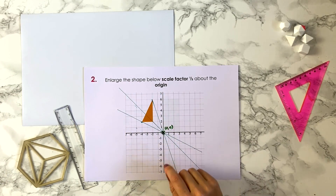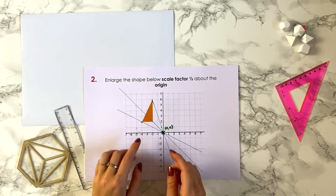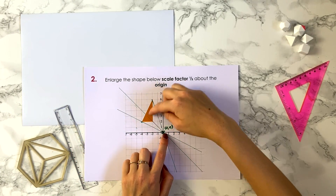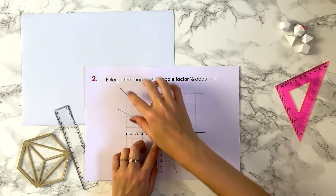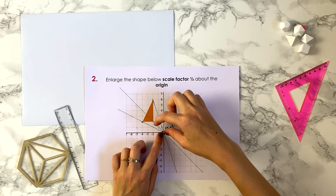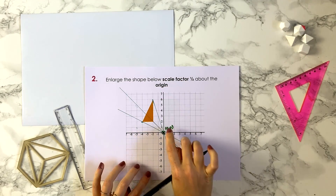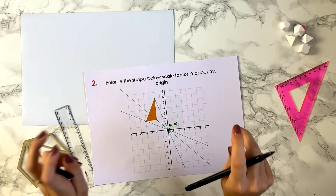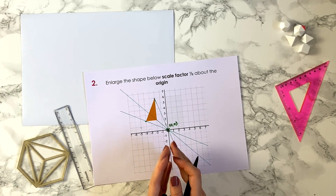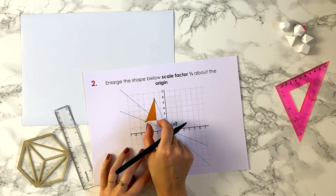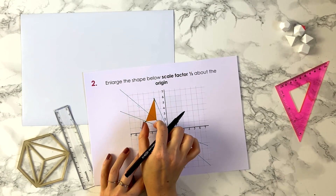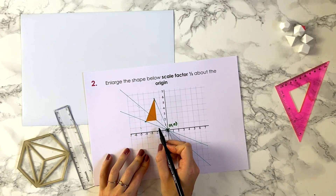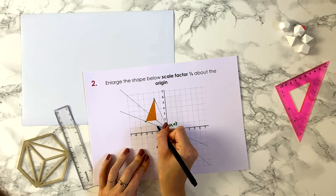Step three is to enlarge by scale factor one half. Because it's a half, the new shape is going to be half as far from the centre of enlargement — the origin — as the original triangle. So it'll be somewhere in this section here, whereas if the scale factor were greater than 1 it would be enlarged further out. Let's look at the bottom side of the triangle: because we're enlarging by a half, we're making it half as big, so half of 2 is 1. We want to find a place sandwiched between the two lines with length 1.